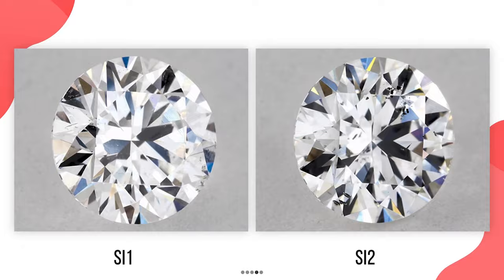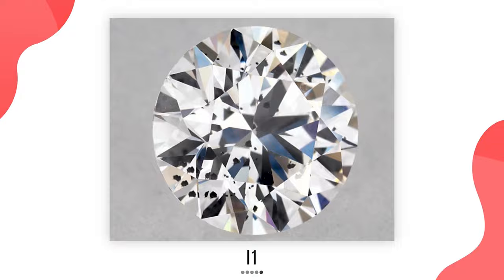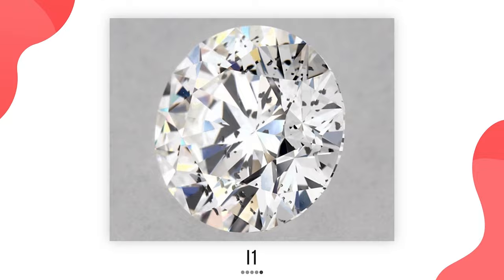The last group at the bottom of the scale is I diamonds — I1, I2, and I3 — which stand for Included. The inclusions are definitely visible to the naked eye; you can easily see the flaws with no magnification tool. In this example, even if I zoom out, we can see the inclusions with no problem.